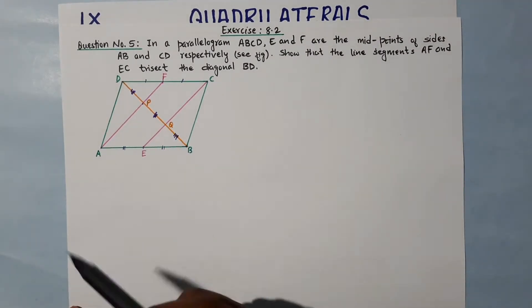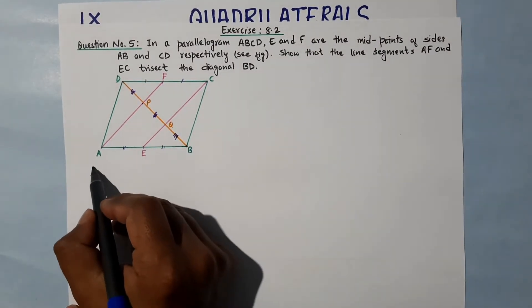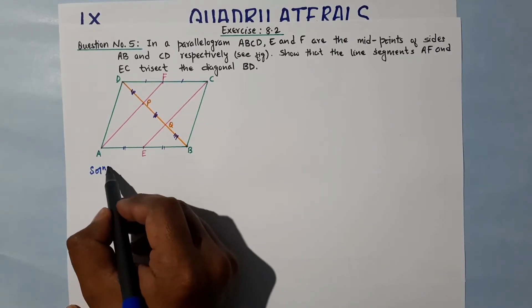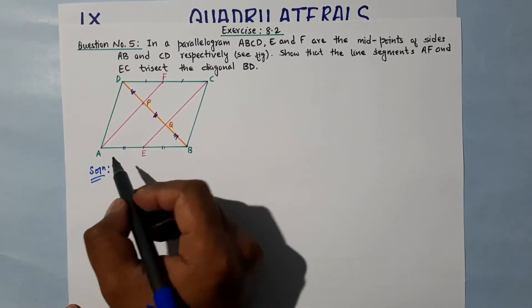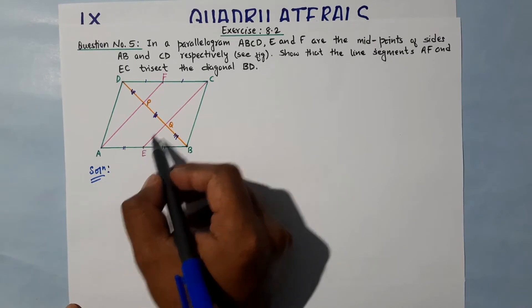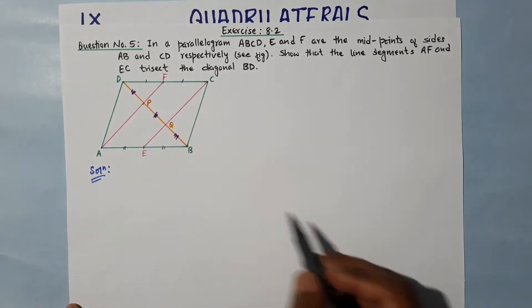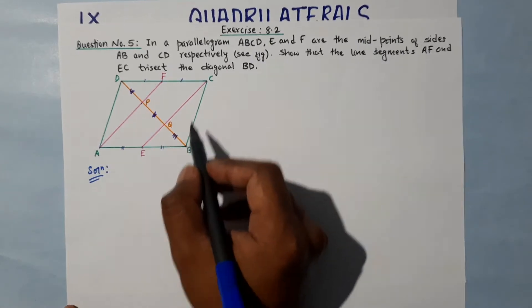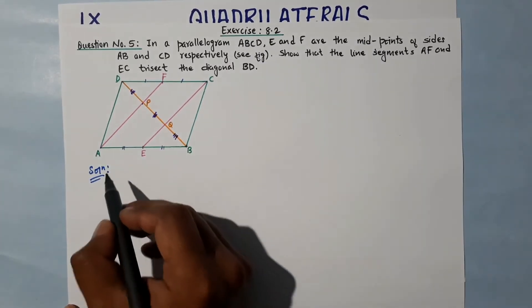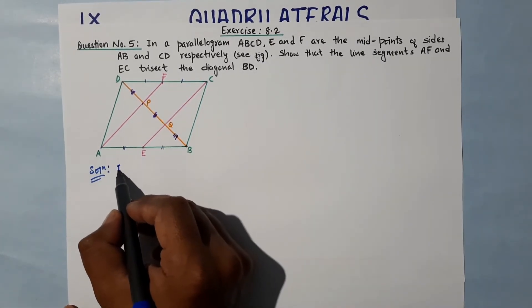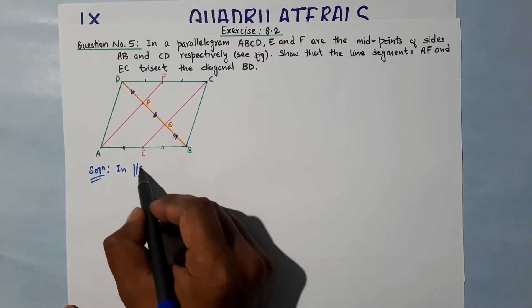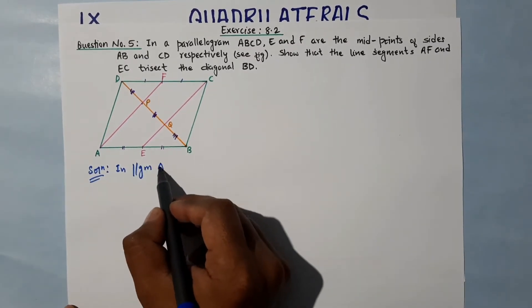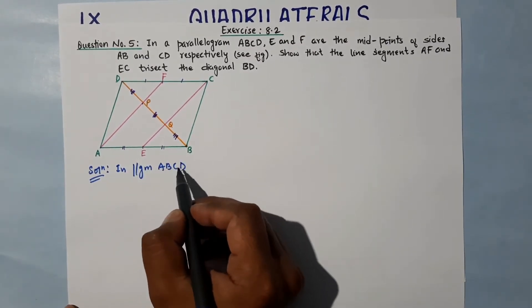In the solution, first we will show that AECF is a parallelogram. ABCD is the parallelogram, so we can first write: in parallelogram ABCD...